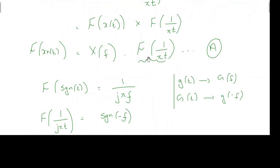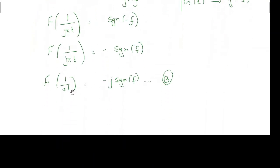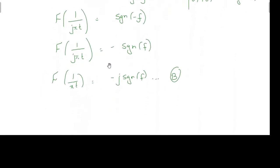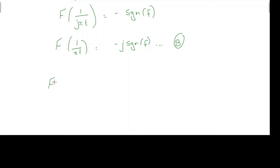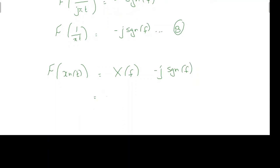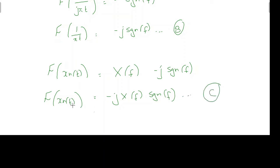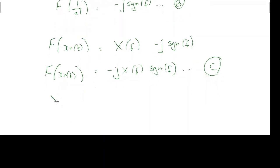Now I am going to plug equation b into equation a. The Fourier transform of 1/(πt) is −j·sgn(f), so the Fourier transform of x_h(t) is equal to X(f) multiplied by −j·sgn(f). Rearranging, this is −j·X(f)·sgn(f). So this is the Fourier transform of the Hilbert transform. Let me name it equation c, and write it as X_h(f) = −j·X(f)·sgn(f).